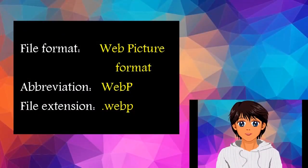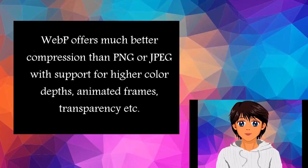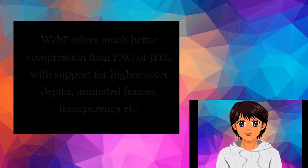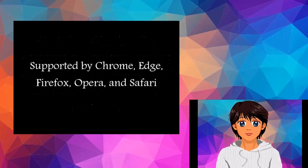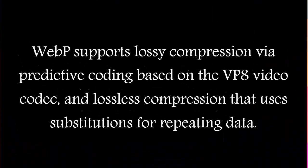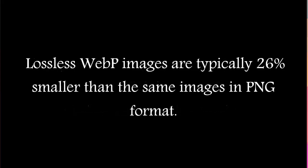Seventh, Web Picture Format (WebP) — an excellent choice for both images and animated images. WebP offers much better compression than PNG or JPEG with support for higher color depths, animated frames, transparency, etc. AVIF offers slightly better compression but is not quite as well supported in browsers and does not support progressive rendering. Supported by Chrome, Edge, Firefox, Opera, and Safari. WebP supports lossy compression via predictive coding based on the VP8 video codec, and lossless compression using substitutions for repeating data. Lossy WebP images are on average 25–35% smaller than JPEG images of visually similar compression levels, and lossless WebP images are typically 26% smaller than the same images in PNG format.